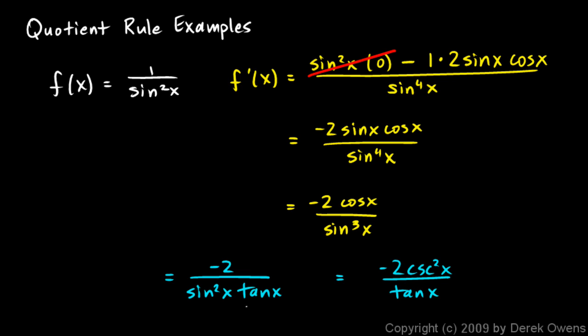Negative 2 cosecant squared x over tangent x. And you see we could just take this tangent x, it remains down here. But a sine squared x in the denominator is equivalent to a cosecant squared x in the numerator.